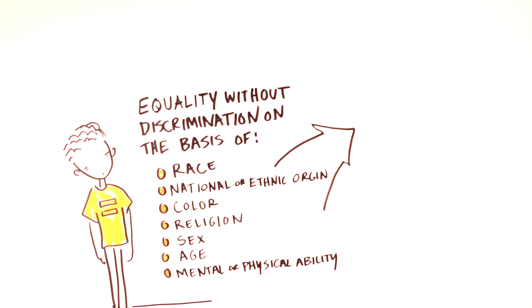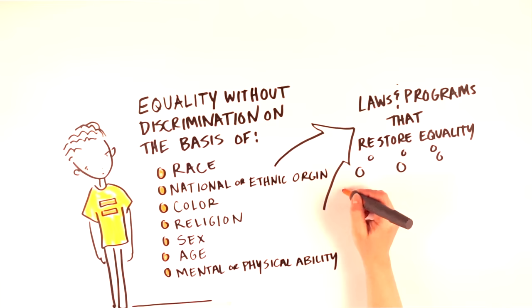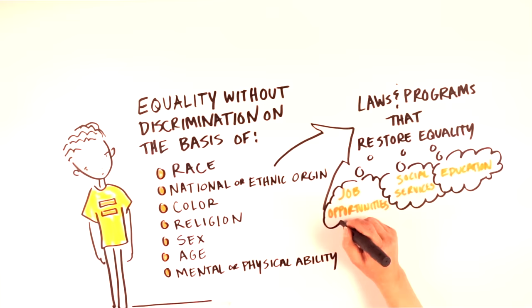However, this guarantee of equal protection and benefit does not prevent the creation of certain laws and programs that favor people who, historically, have not been treated equally. For example, federal and provincial governments have programs aimed at improving job opportunities, social services, and education for many groups that have been disadvantaged in the past.